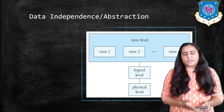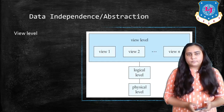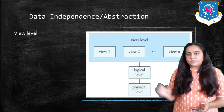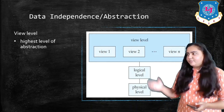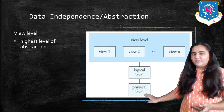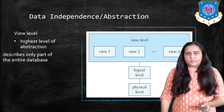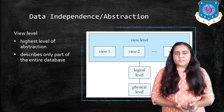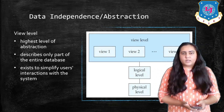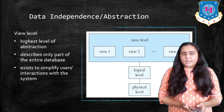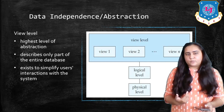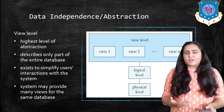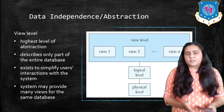The next level is the view level — the topmost and highest level of abstraction. At the view level, you don't need to know anything about what happens at the physical or logical level. It describes only part of the entire database and exists mainly to simplify users' interactions with the system. The system may provide many views for a single database.